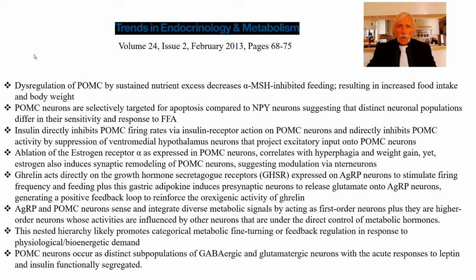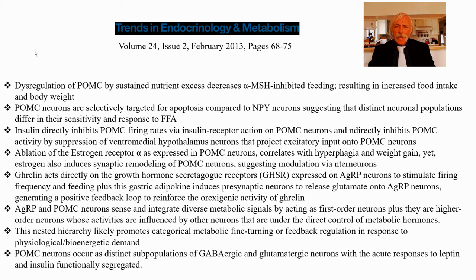Insulin directly inhibits POMC firing rates via insulin receptor action on POMC neurons, and indirectly inhibits POMC activity by suppression of the ventromedial hypothalamic neurons that project excitatory input into those neurons. Remember, insulin is not necessary for glucose uptake in the brain — IGF functions there. So what is insulin doing in the arcuate nucleus? It's not carrying out glucose transport — it's regulating the POMC and NPY axis. Insulin has no role in brain glucose uptake, but that doesn't mean insulin has no effect on the brain.